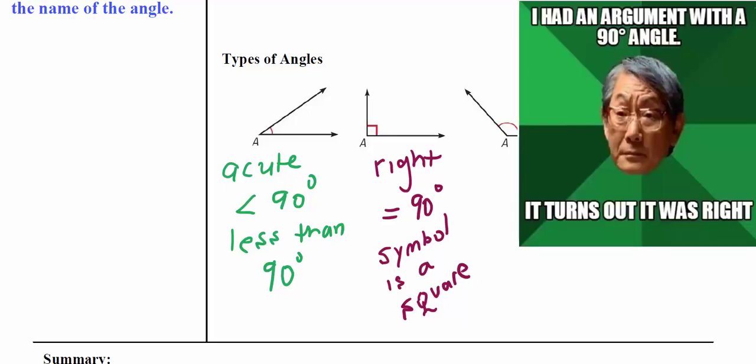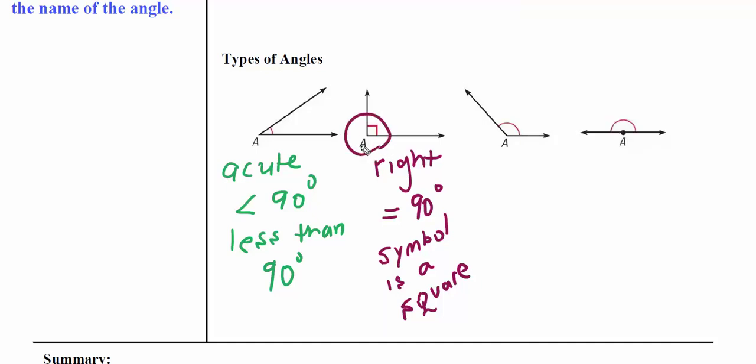This is a right angle. A right angle is exactly 90 degrees. If it's a right angle, there will be a little square symbol in the angle itself. You may be aware this little symbol also means perpendicular. Perpendicular also means they form a right angle.